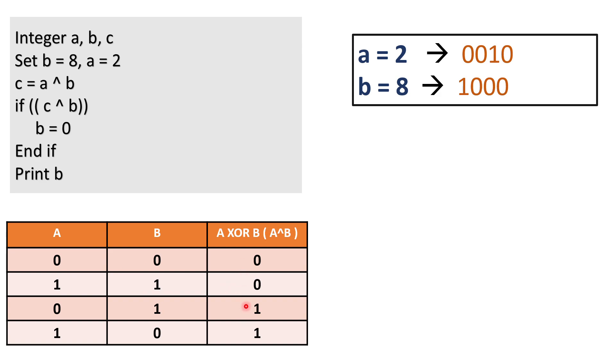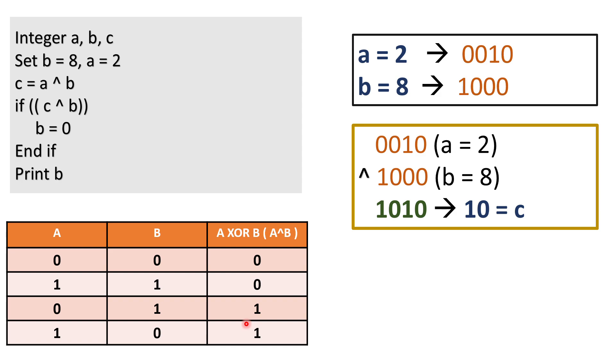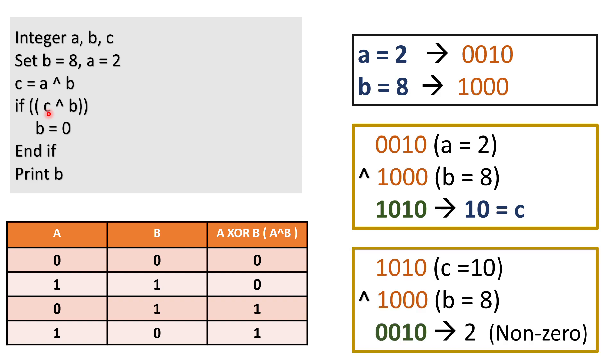When we will do XOR for 2 and 8 we will get 1010 which is equivalent to 10. So now the value of C is 10. Now in the next statement inside the if condition we have to perform XOR for C and b. So the XOR of C and b will be 0010 which is equivalent to 2 which is a non-zero number. So the if condition will be true and that's why the value of b will be equal to 0. And in last when we will print b it will be 0. So that's why our answer is 0.